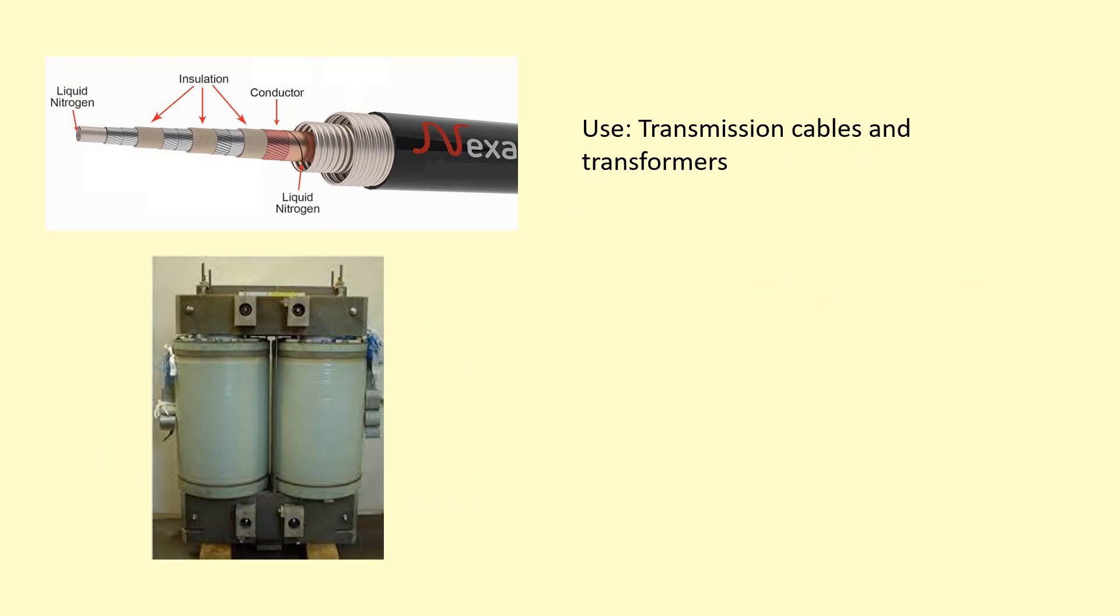Another use is in transmission cables and transformers. So, as you can see in the top here, this cable has some metal and then it's got liquid nitrogen going through it as well to cool it down to below the critical temperature. And at this point, the resistivity becomes very low. So, because the resistivity is very low, the resistance is low and there's no energy loss. So, it means that it's more efficient. It transfers energy over long distances without losing energy as heat. It's also used in transformers like you see in this diagram here.